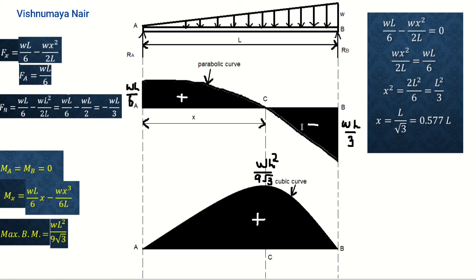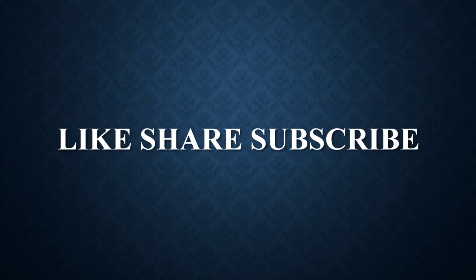The shear force variation is represented using a parabolic curve, and the bending moment variation is represented using a cubic curve. The shear force at end A equals WL/6, at end B equals minus WL/3, and the maximum bending moment equals WL²/9√3, occurring at point C where shear force is 0. Please do like and share the video and subscribe the channel. Thank you.